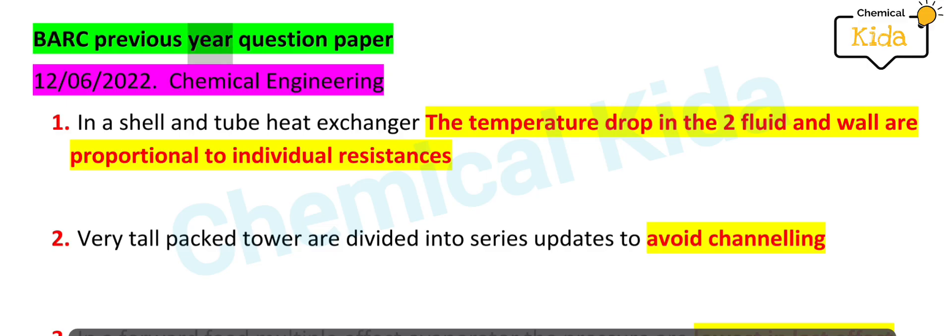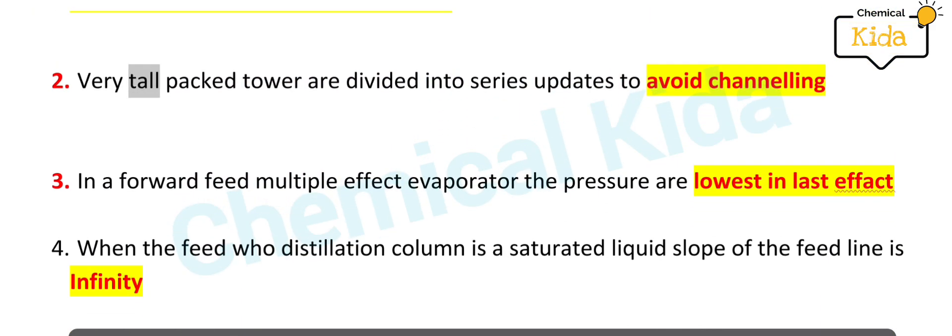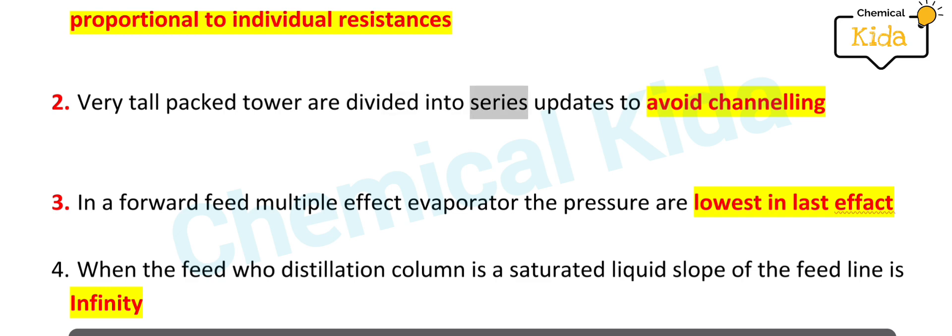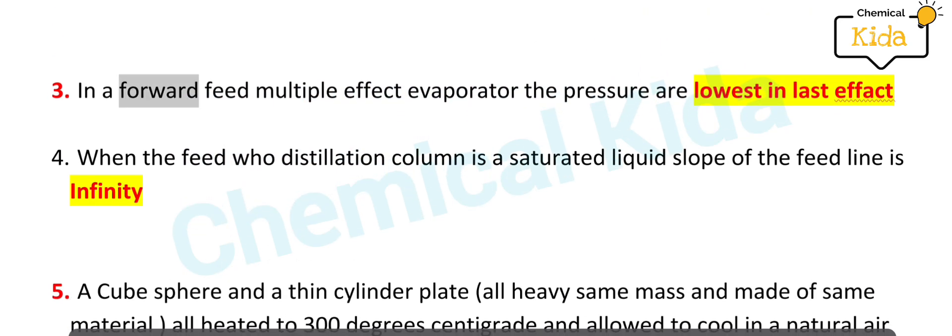BARC previous year question paper, 12th June 2022, Chemical Engineering. In a shell and tube heat exchanger, the temperature drop in the two fluid and wall are proportional to individual resistances. Very tall packed towers are divided into series updates to avoid channeling. In a forward feed multiple effect evaporator, the pressure are lowest in last effect.